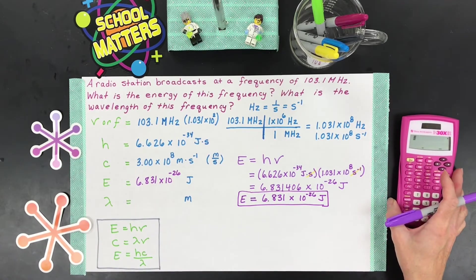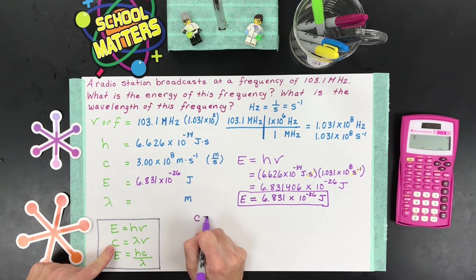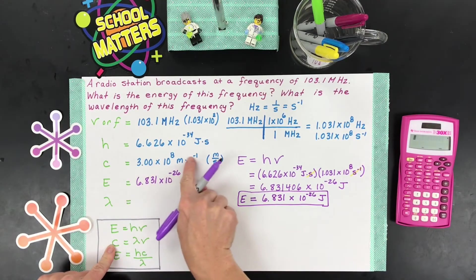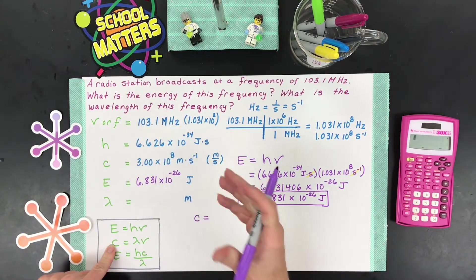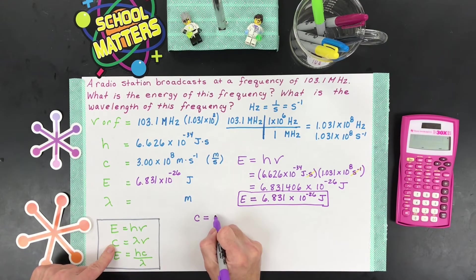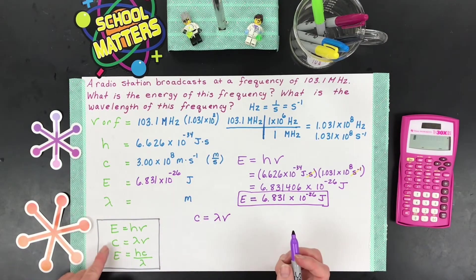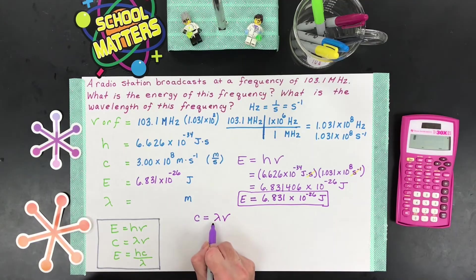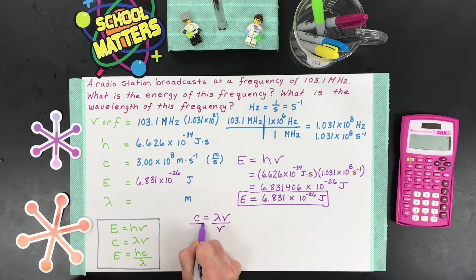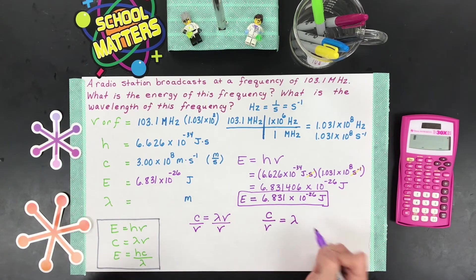So our next one's trying to find a wavelength. So we can use either one of these equations. But I'm going to go for this one that is C, which is speed of light. Again, FM radio waves travel at the speed of light because it's electromagnetic radiation. So we can use that. So C equals lambda times nu. We really want to calculate lambda. So let's isolate for that. Divide both sides by frequency. That means we get a new equation that looks like this. C divided by frequency equals lambda. Excellent.